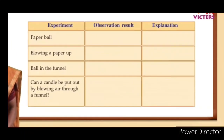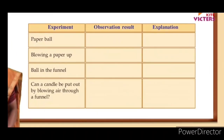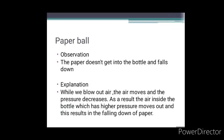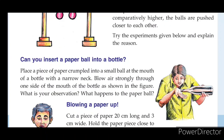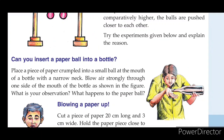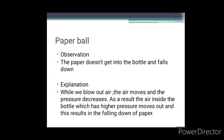This is an observation and explanation for how to do this in the teacher class. This is a paper ball. The paper doesn't get into the bottle and falls down. It doesn't fall down into the bottle. I will explain how the air moves and pressure decreases.